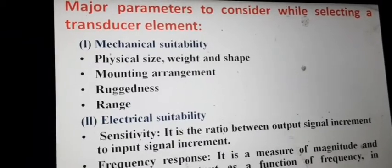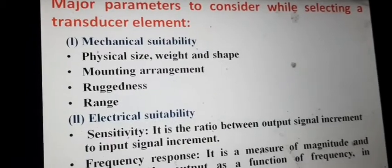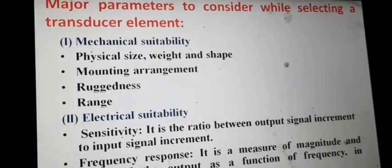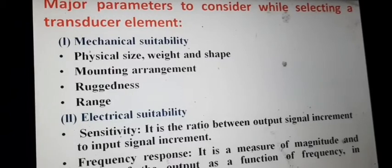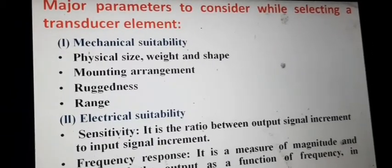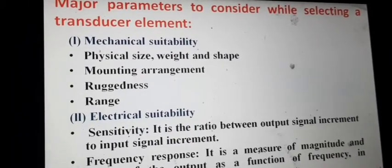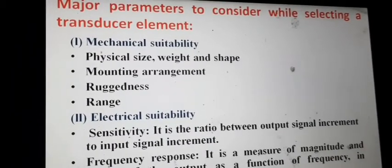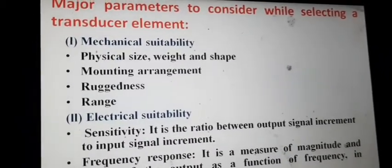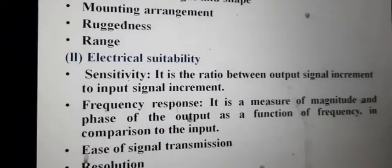The next parameter is range. Range means the minimum and maximum limit of what the transducer can measure. For example, a temperature measuring device that can measure from minus 300 degrees centigrade to plus 300 degrees centigrade — that is its range. You should select a transducer that can measure from the minimum to the maximum value required, so it should have a high range.